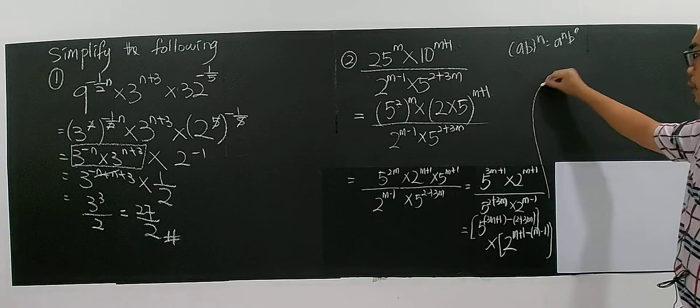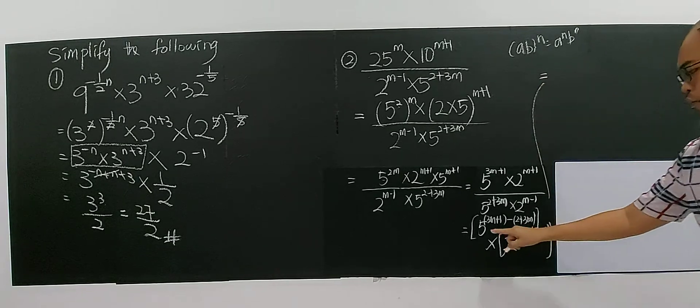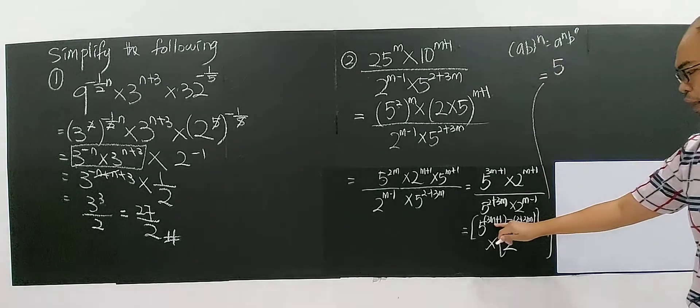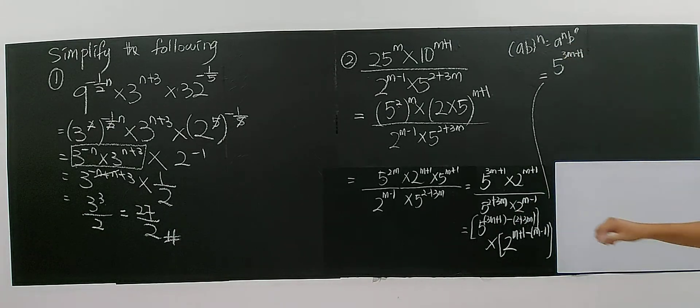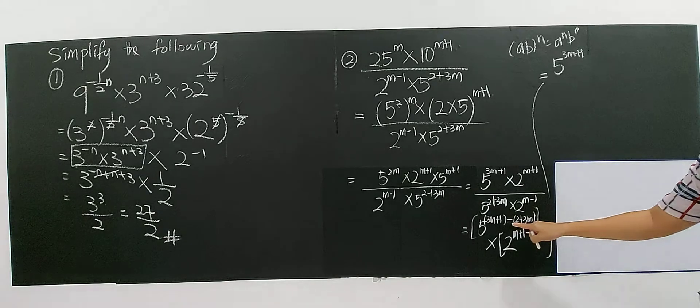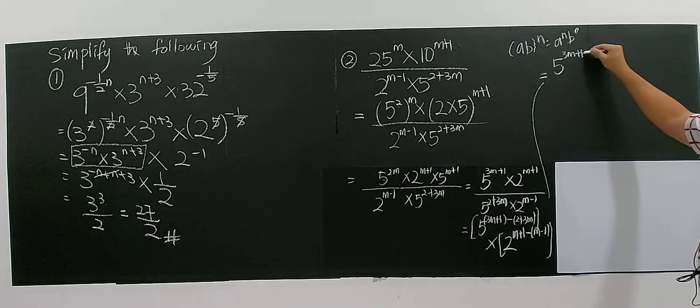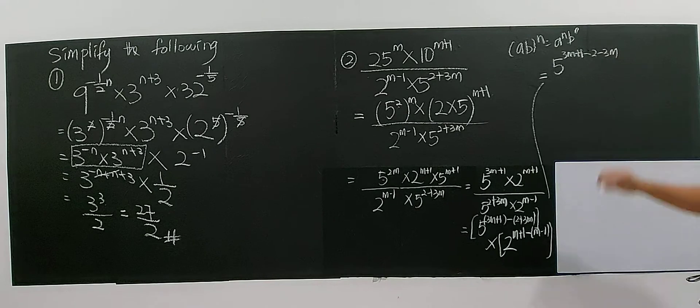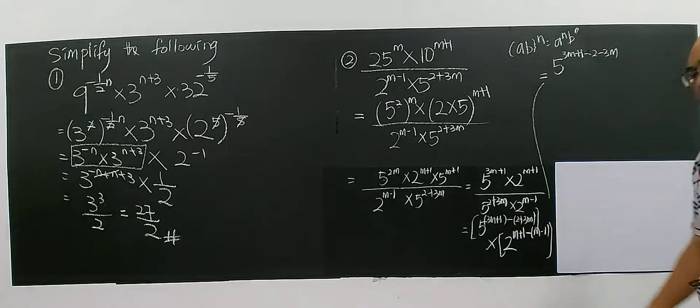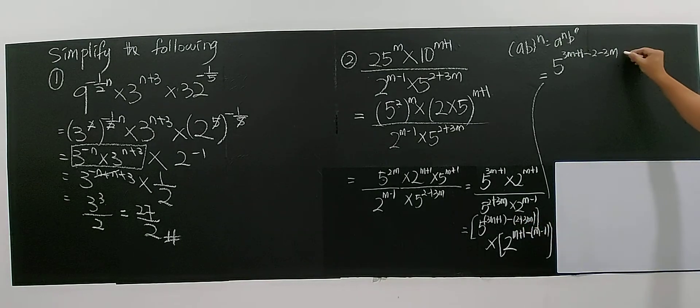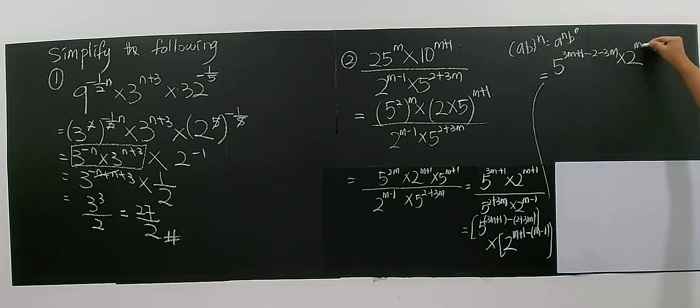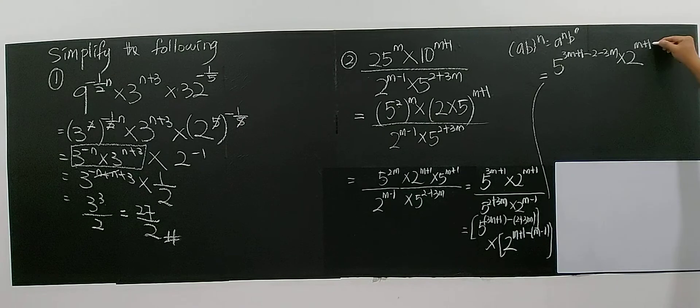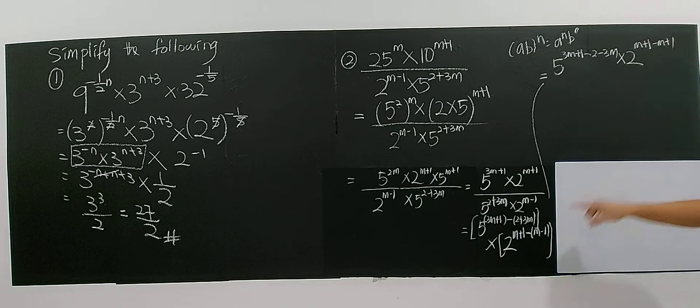So now let's move on, which is equal to 5 power of 3M plus 1, 3M plus 1 minus 2 minus 3M. Minus 2 minus 3M. Minus 2 minus 3M. And multiply with 2, M plus 1, negative M plus 1. Negative M, negative negative, positive 1.